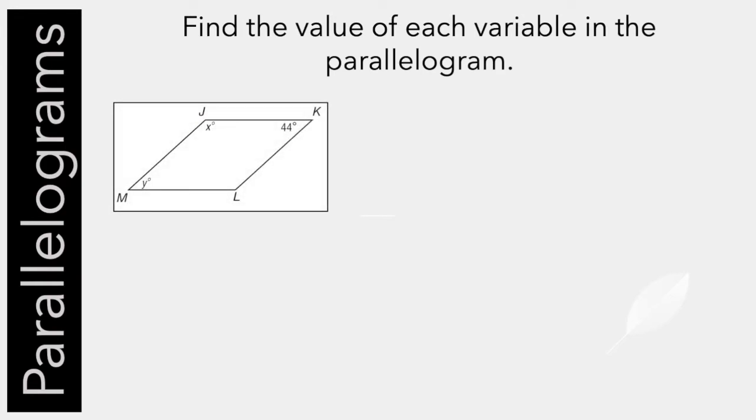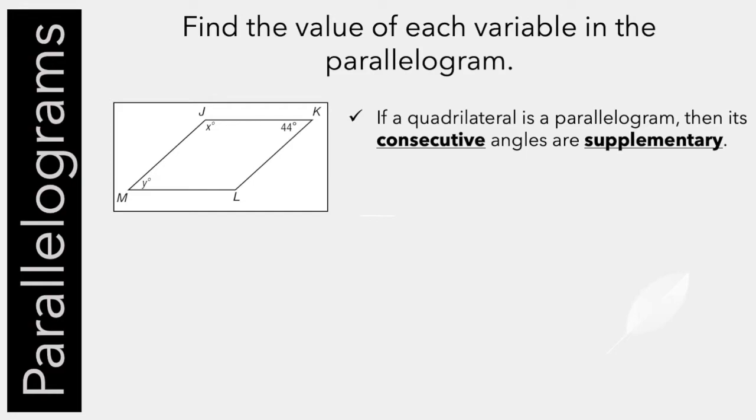How about this one? Well, what do we know? We know that consecutive angles in a parallelogram are supplementary, meaning x plus y equals 180. So if we look at the top here, these have to equal 180 together. So I could take 180, subtract 44, and end up with x equals 136.